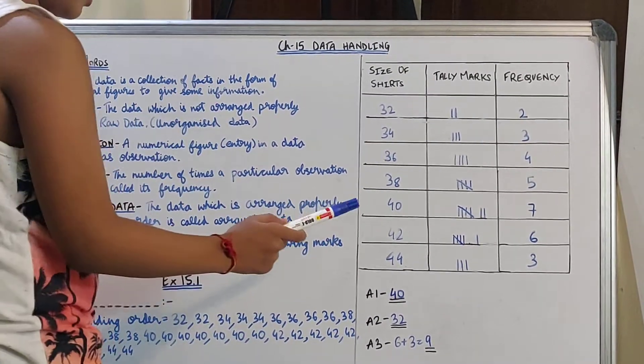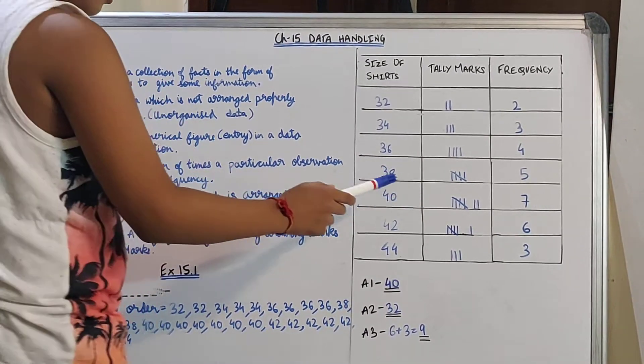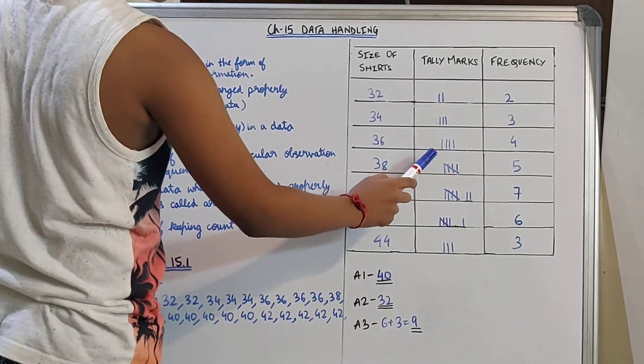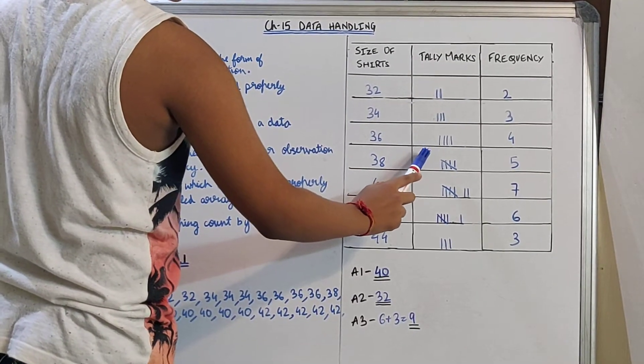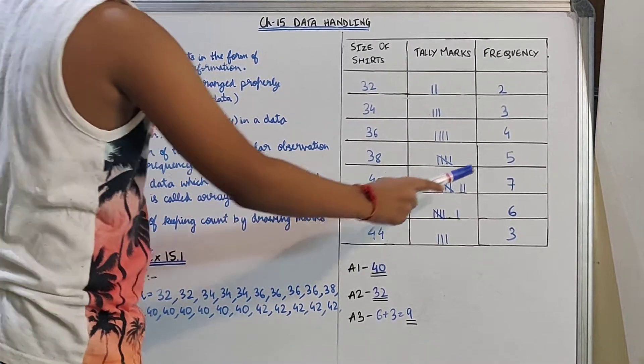Then 38. 38 is repeated 5 times. So first we have to make 4 tally marks, and then the 5th one will be drawn across the previous 4 tally marks. Then 5.